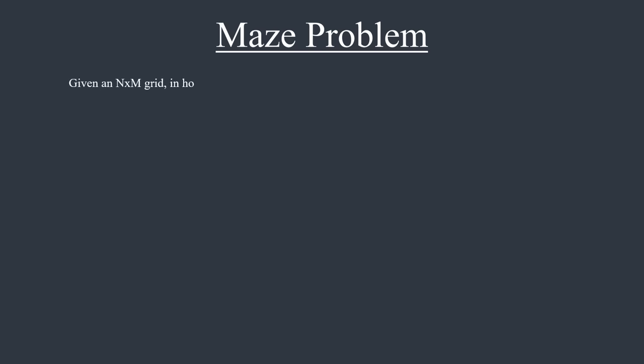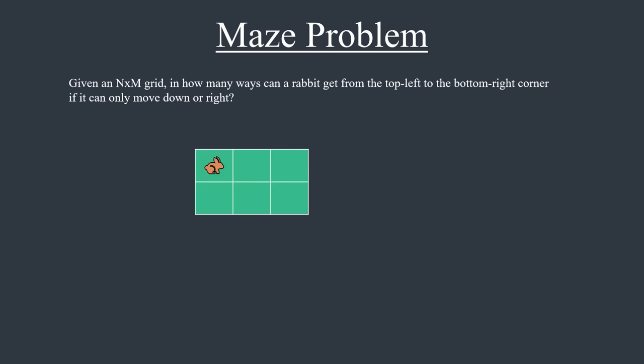Before finishing this video, let's look at one more counting problem. Imagine an n by m grid. A rabbit is in the top left corner and wants to go to the bottom right corner. It can only go down or right. In how many ways can it reach the bottom right corner? For example, for a 2x3 grid, there are three ways in which the rabbit can get to the bottom right corner: right-right-down, right-down-right, and down-right-right.